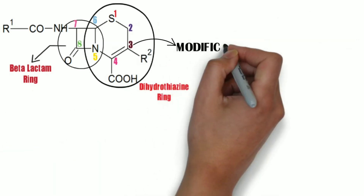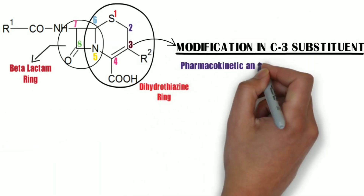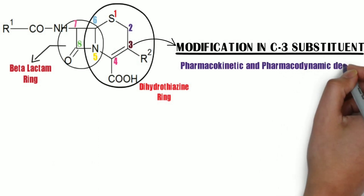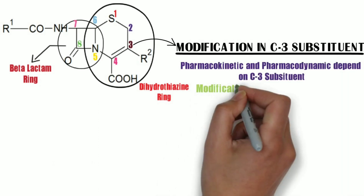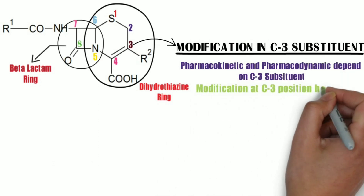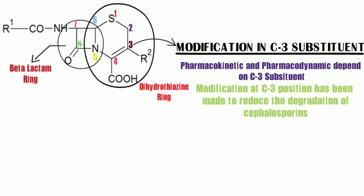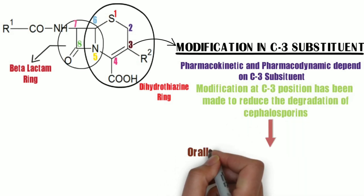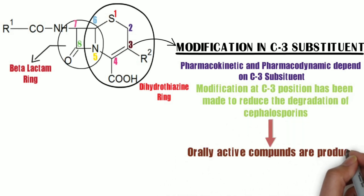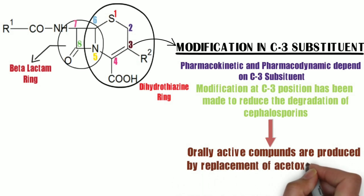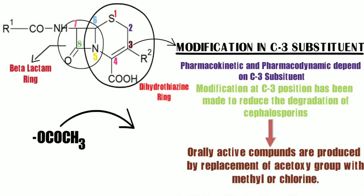At the third position of the dihydrothiazine ring, pharmacokinetic and pharmacodynamic properties directly depend on the C3 substituent. Modification at the C3 position has been done to reduce the degradation of cephalosporins. For example, orally active compounds are produced by the replacement of the acetoxy group with a methyl or chlorine atom.